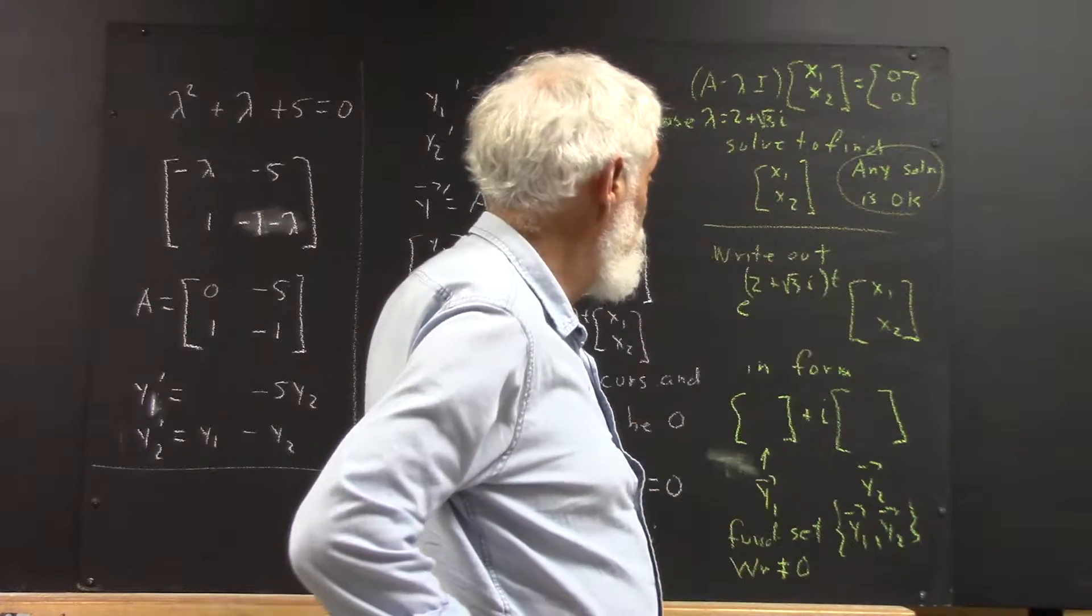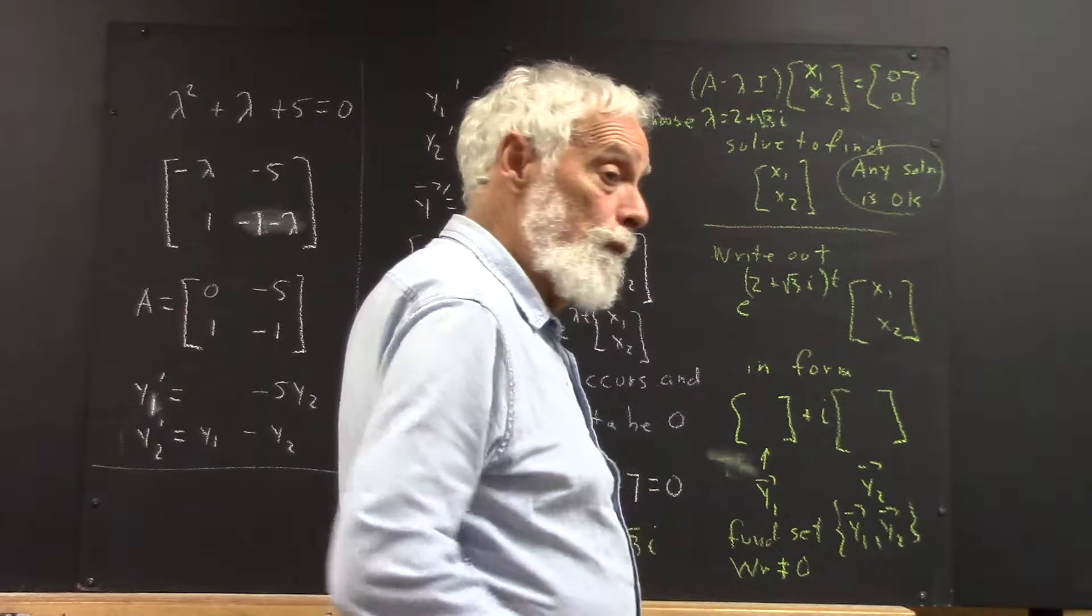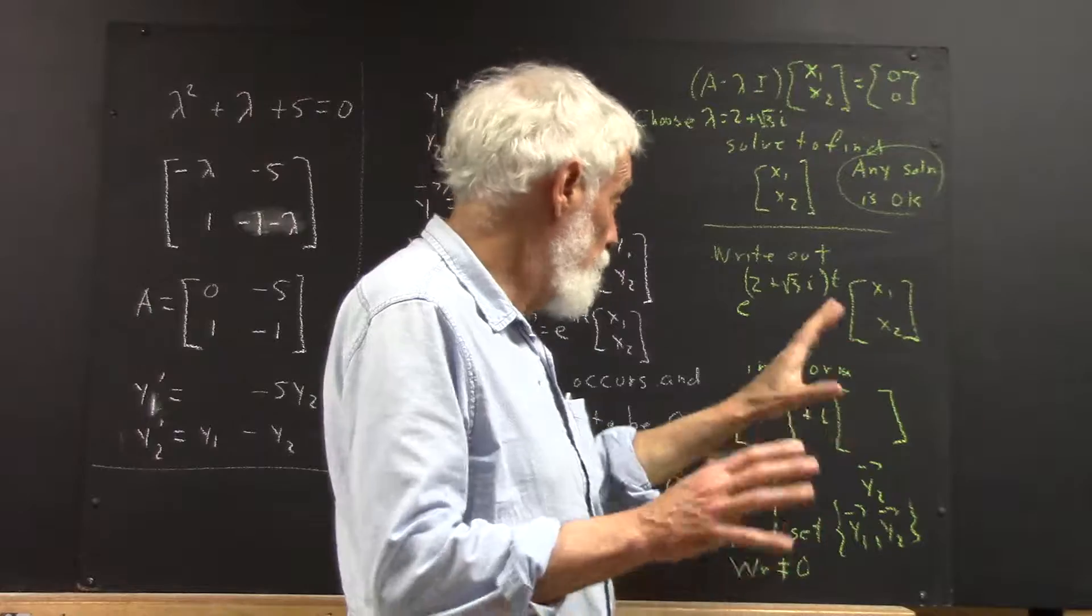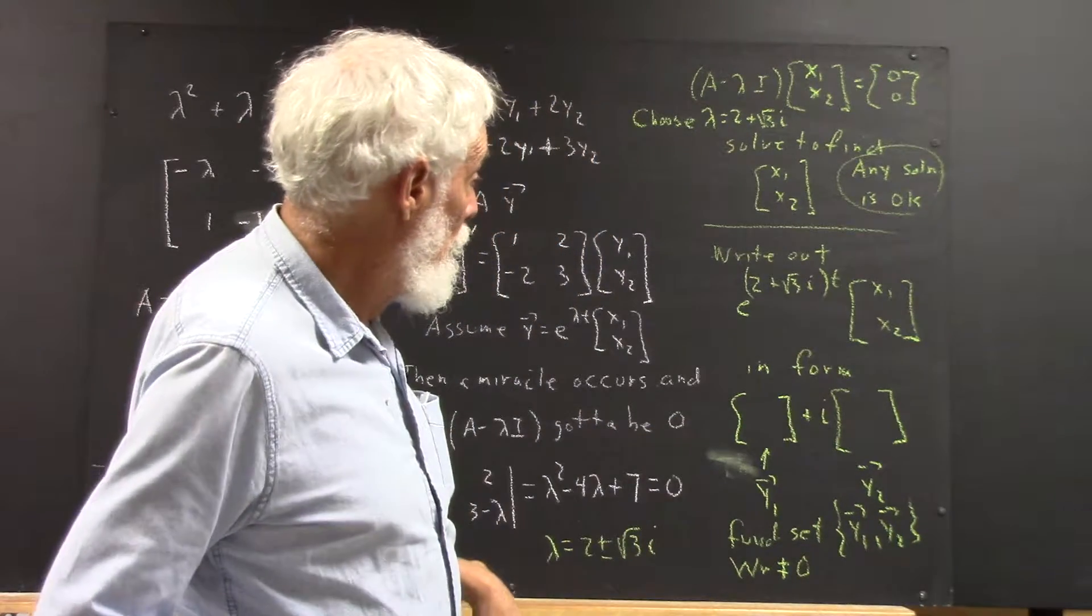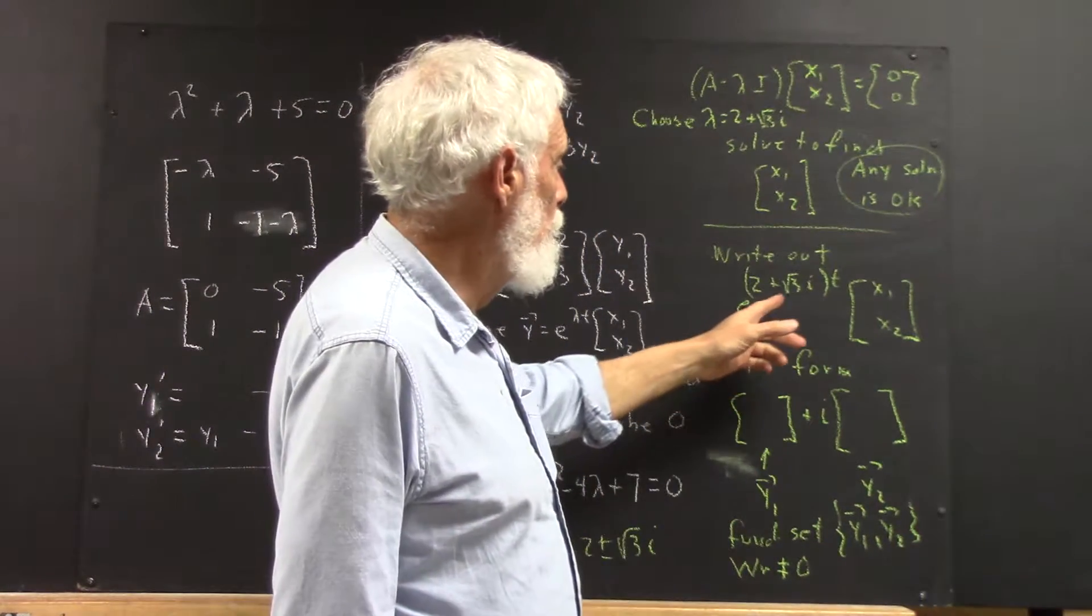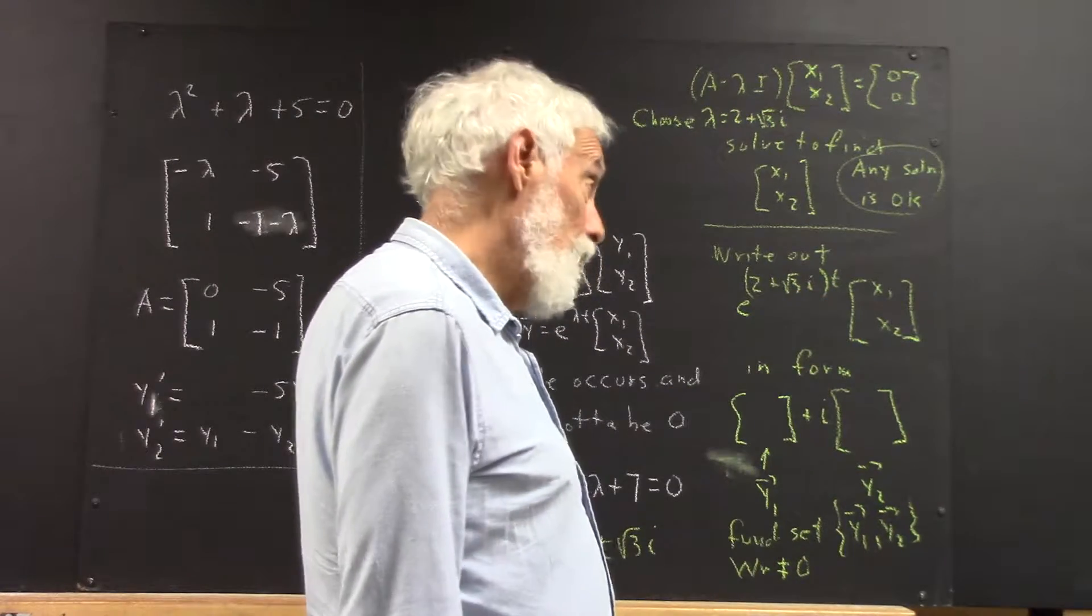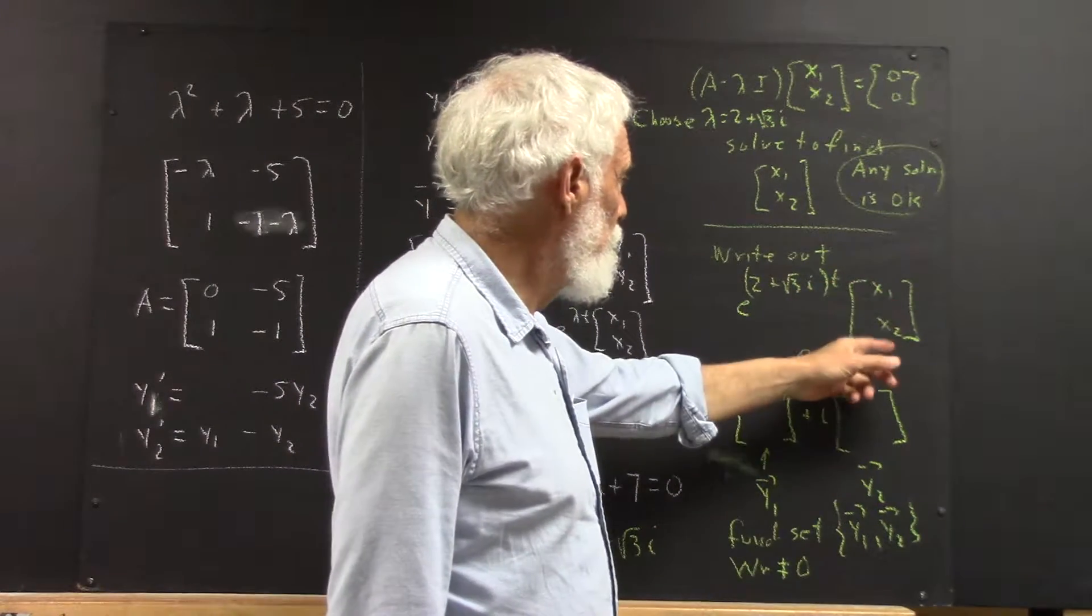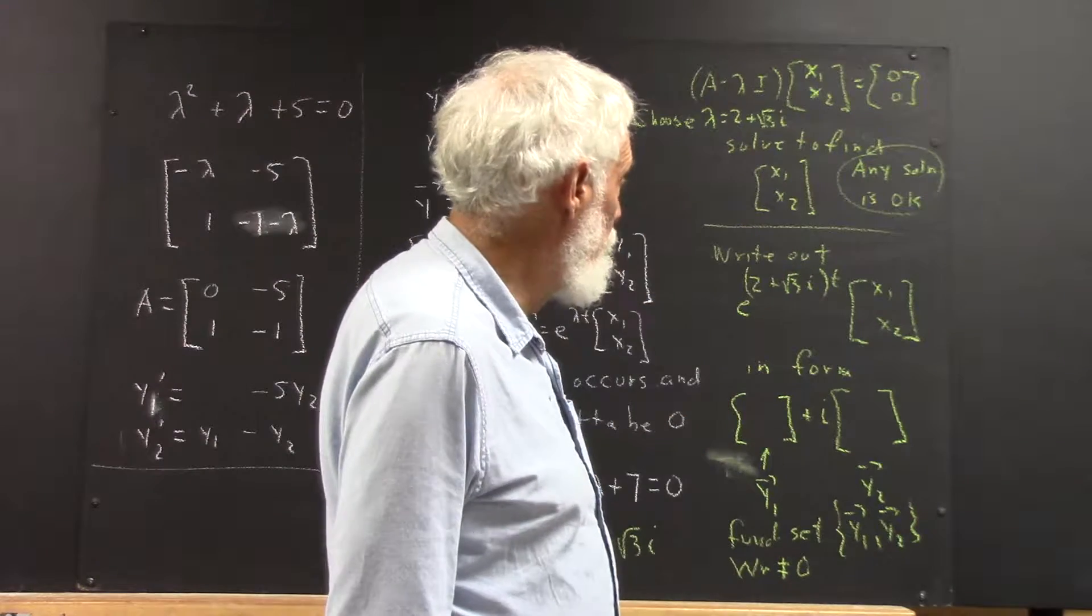And any solution for x1, x2 is okay. Now I'm just outlining the solution. You should go through this solution. Then you write out e to the 2 plus square root of 3i times t times x1, x2, after you've found your x1 and x2.